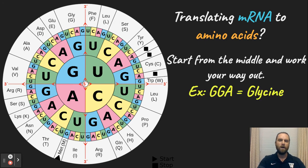So let's pretend that we have a codon like GGA. If you're looking at a codon chart like this, you look at the middle and you work your way out GGA and you get the amino acid glycine. That is how you work this codon chart when you're trying to translate that mRNA into amino acids.